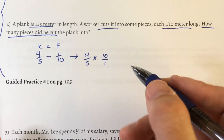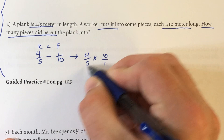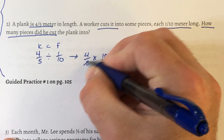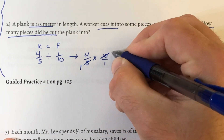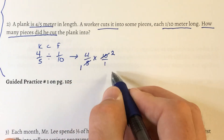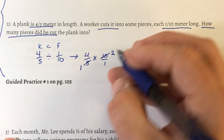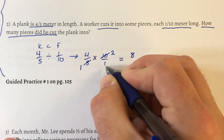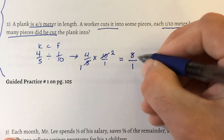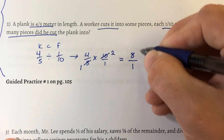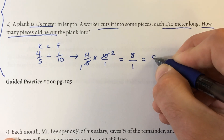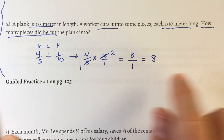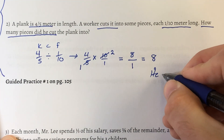Our problem is now 4/5 times 10/1. Let's see if we can cross-cancel: 5 and 10 share a common factor of 5. Five goes into 5 once, and 5 goes into 10 twice. Four and 1 have no common factors besides 1, so we leave those. Multiply across the top: 4 times 2 is 8. One times 1 is 1. This is improper, so top divided by bottom: 8 divided by 1 is 8. He cut the plank into 8 pieces.